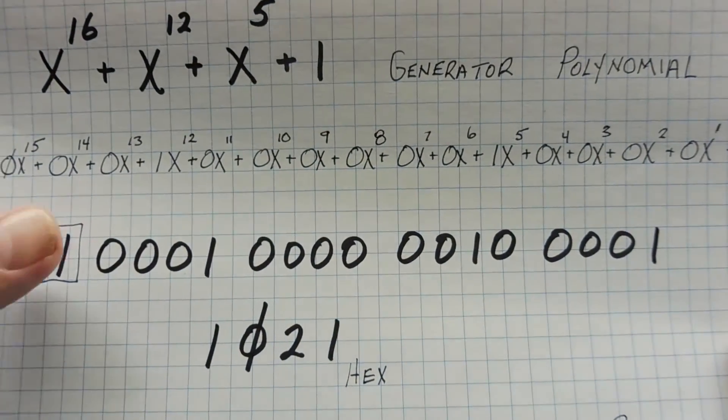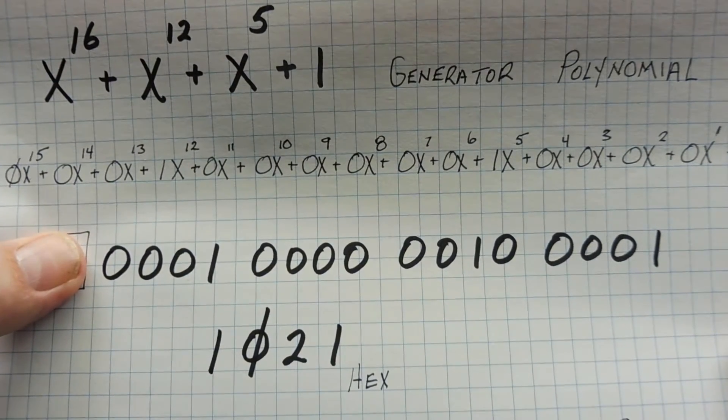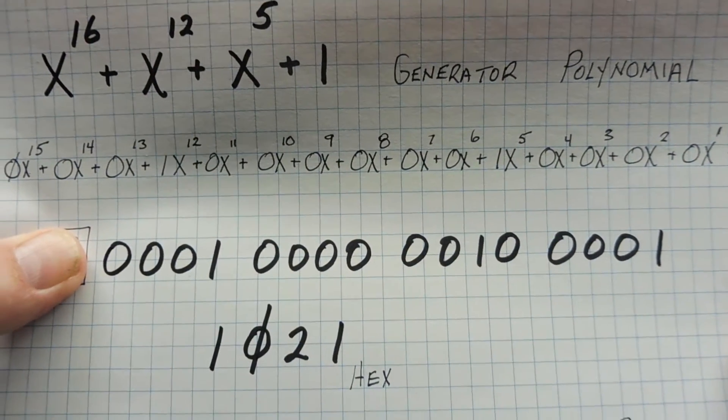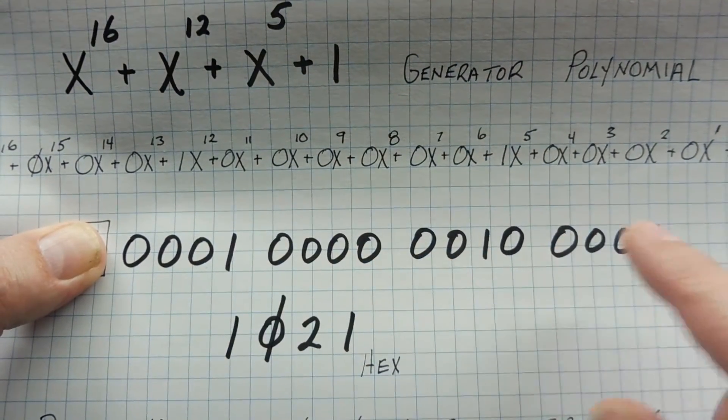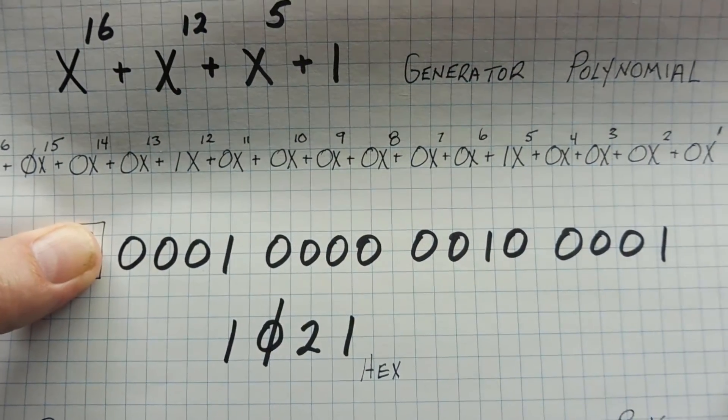And the first thing we do is we truncate the most significant bit, and we're left with 16 bits. And if you change that into hex, it works out to 1021. So that will be our generator polynomial.